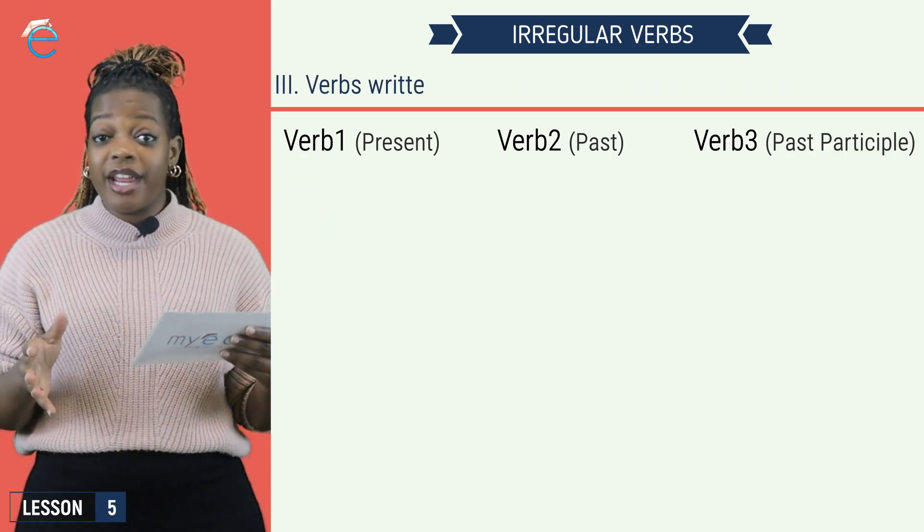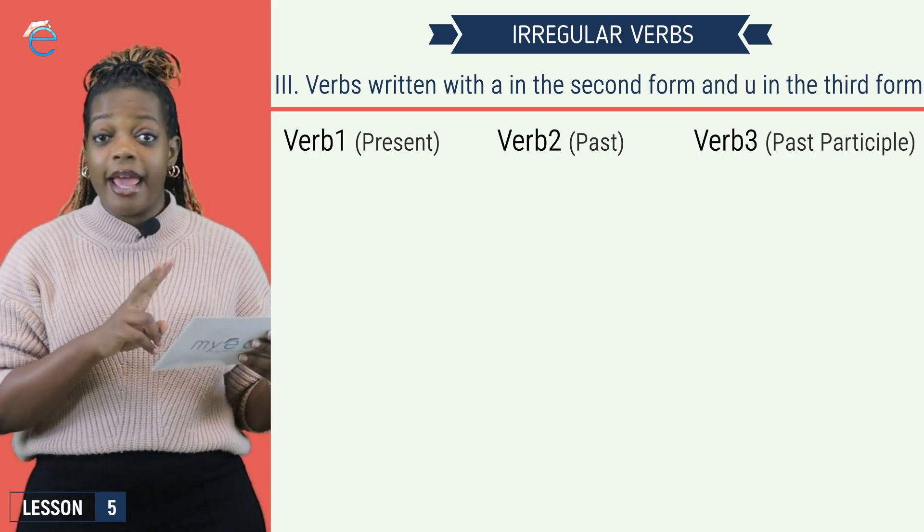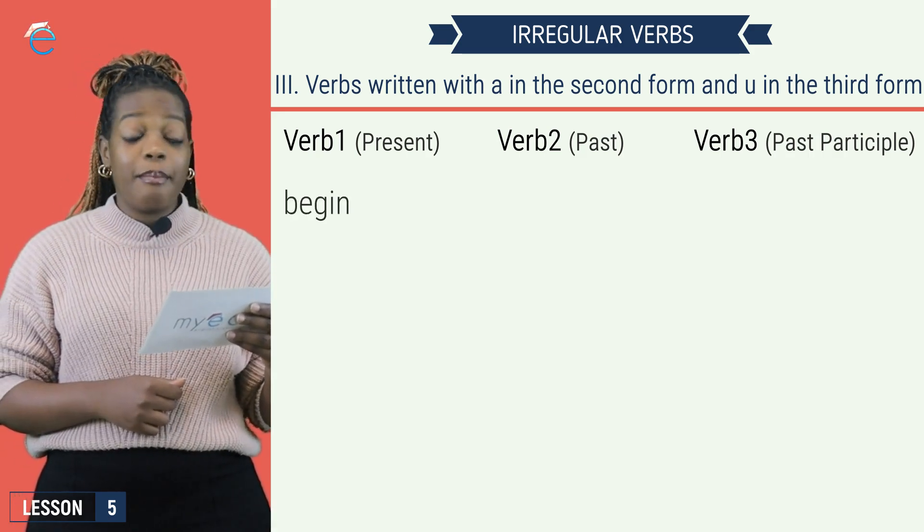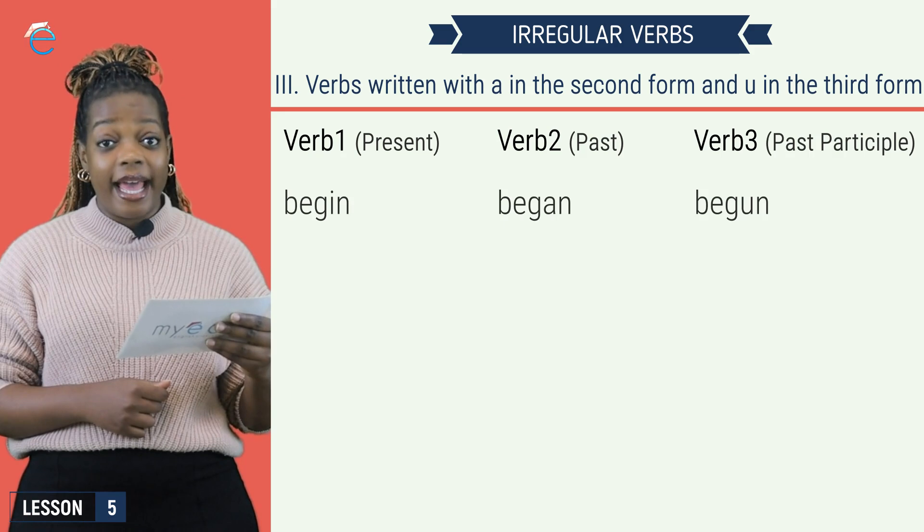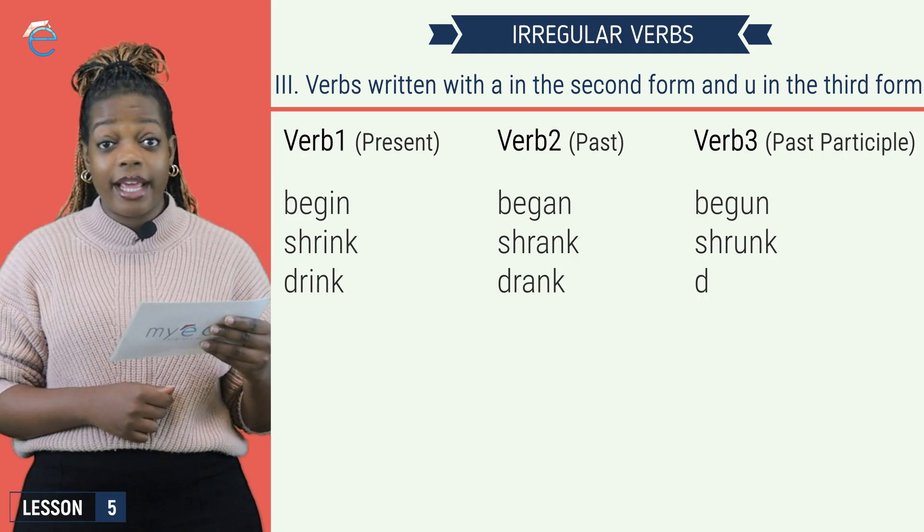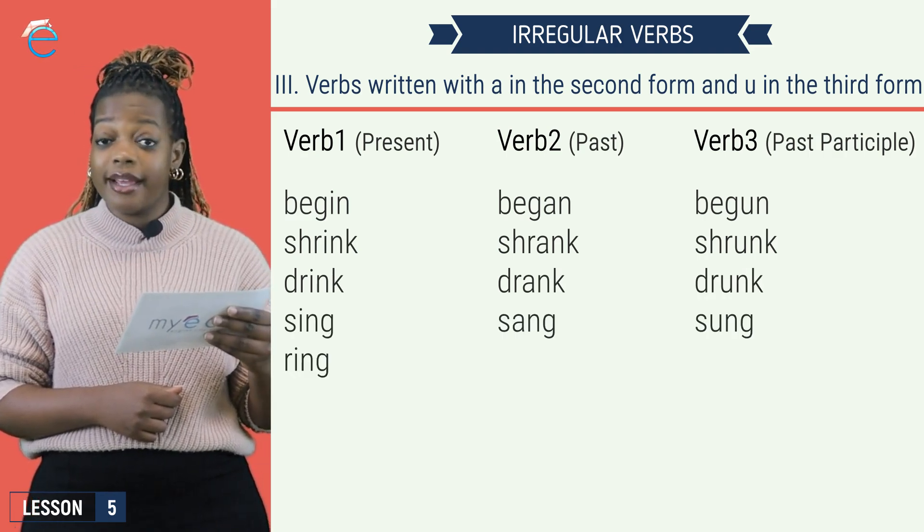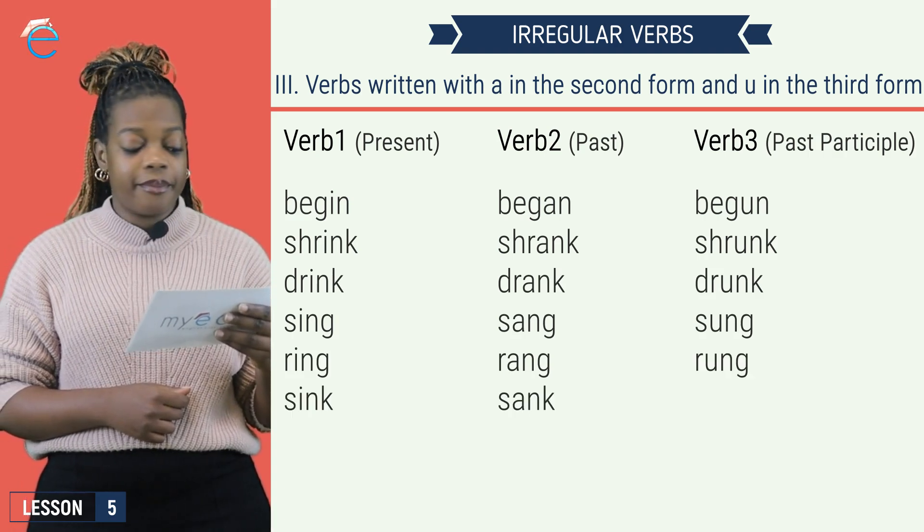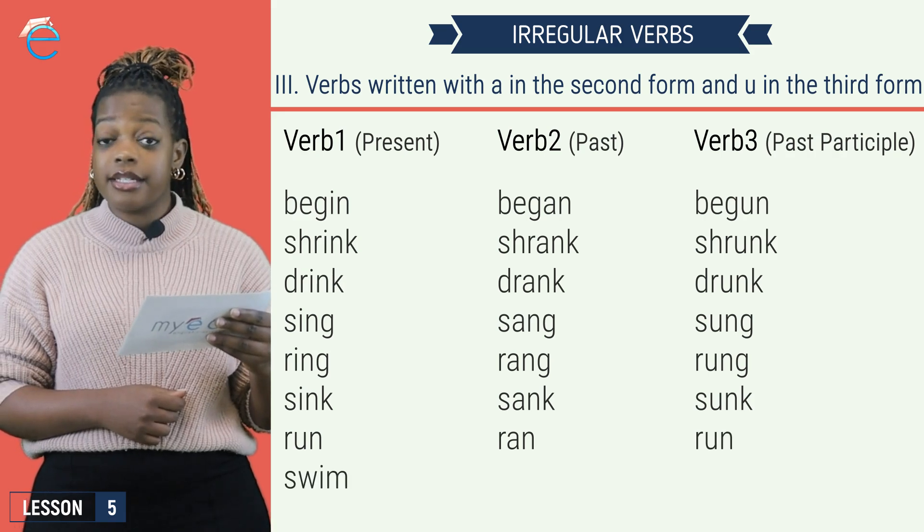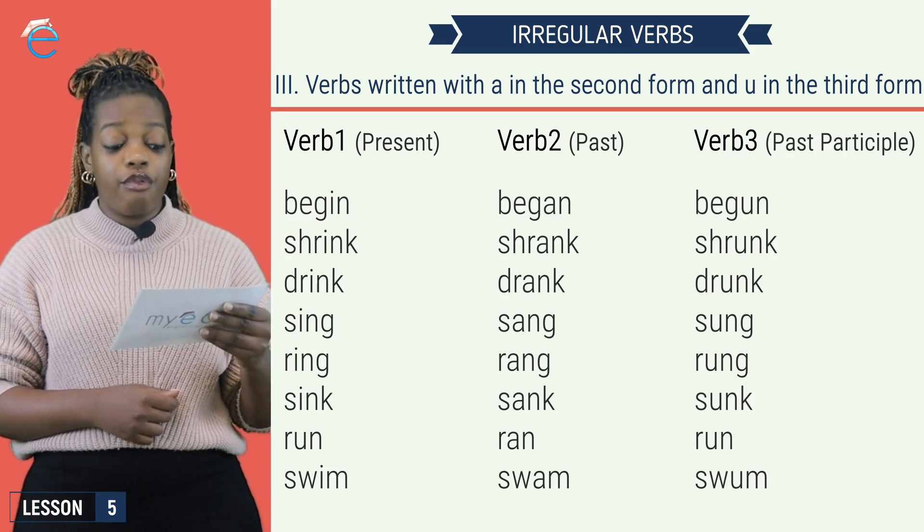Group three are verbs that are written with an a in the verb two form, but a u in the verb three form. Begin, began, begun. Shrink, shrank, shrunk. Drink, drank, drunk. Sing, sang, sung. Ring, rang, rung.